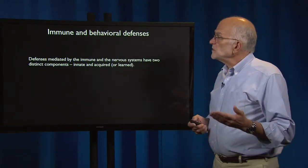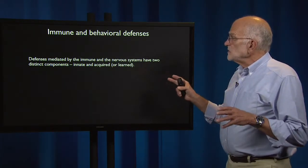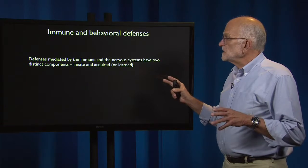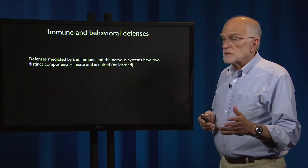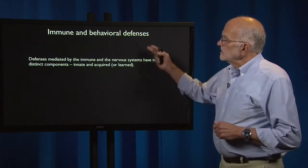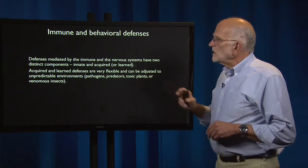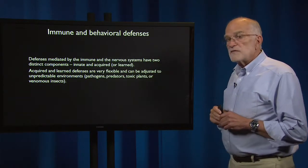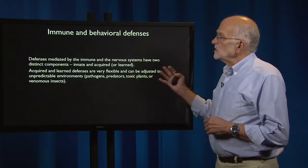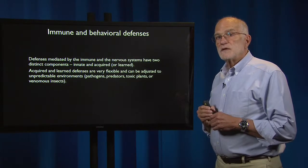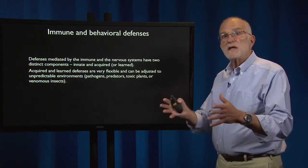There are important distinctions between immune and behavioral defenses. Defenses mediated by the immune and nervous systems have two distinct components: innate and acquired. Both of them, in some sense, learn. Acquired and learned defenses are very flexible and can be adjusted to unpredictable environments. If you don't know what kind of environment is going to be encountered, it would be good to have a system designed that can learn to deal with anything that comes along.